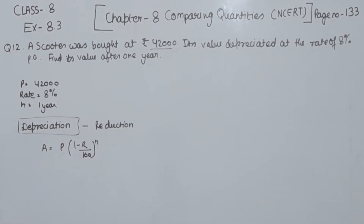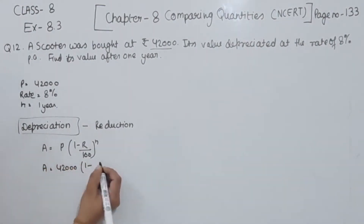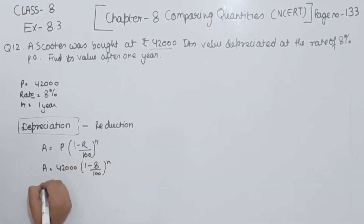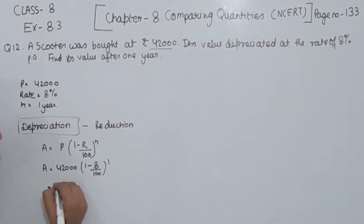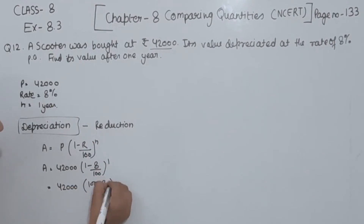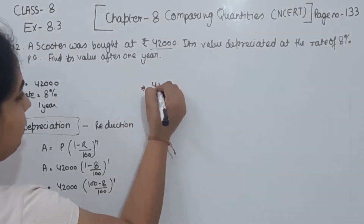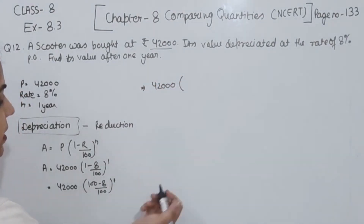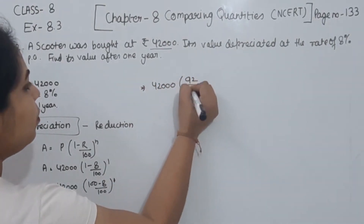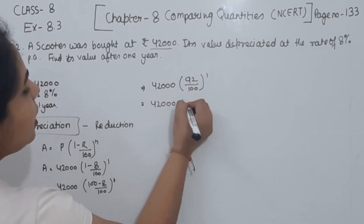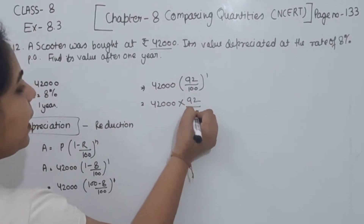So we write: A = P, which is 42,000, times (1 - 8/100)^n, and n is 1. This gives us 42,000 × (100 - 8) / 100 to the power 1. So this is 42,000 × 92 / 100 to the power 1.